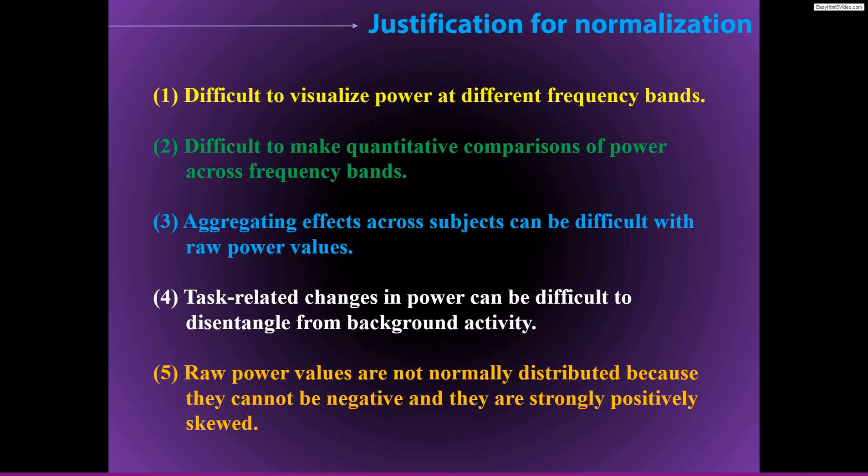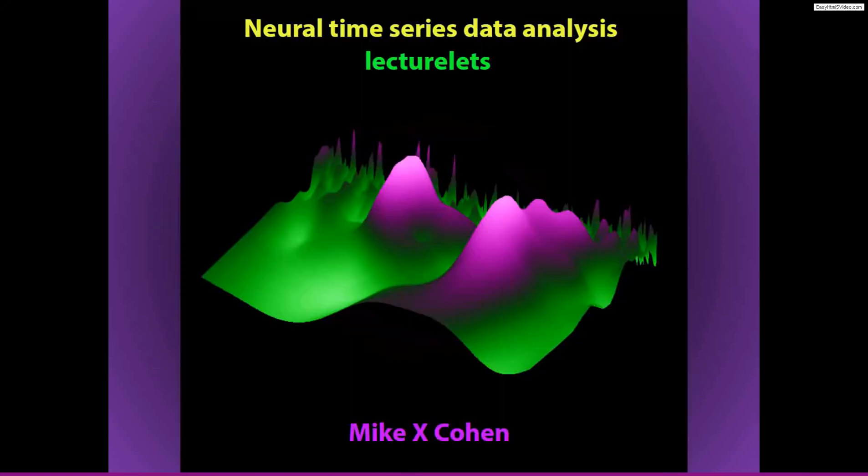And in contrast, baseline normalized power values, decibel transformed or percent change transformed values, tend to be normally distributed and they are normally distributed under the null hypothesis. So these are some justifications for why you would want to do normalization. In the next video, I'll introduce you to the mechanics of two specific normalizations, decibel and percent change.